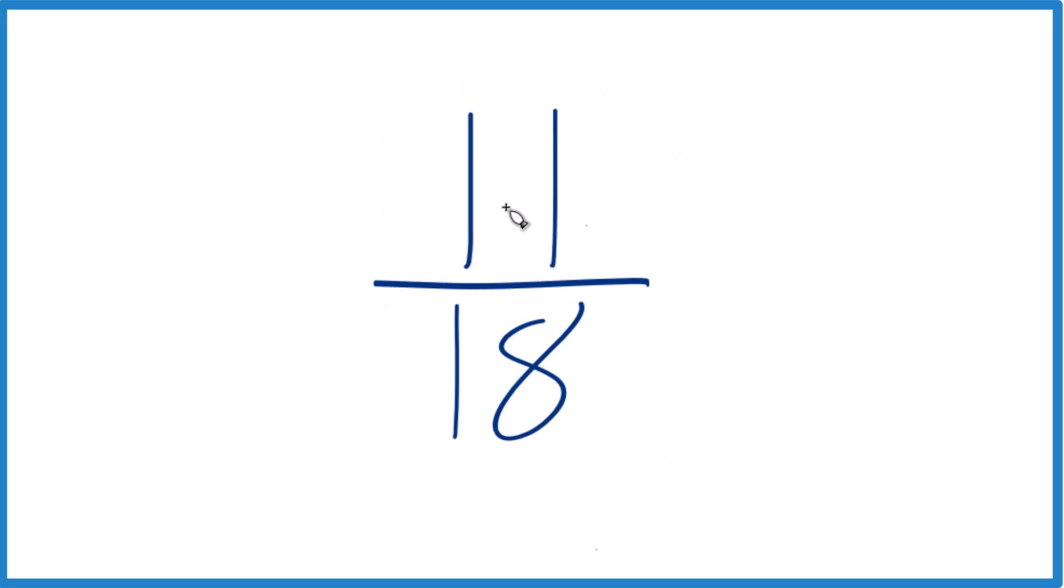When we're simplifying fractions, we want to find a common factor. That's a factor that goes into both 11 and 18 evenly, a whole number. We're looking for the greatest common factor.